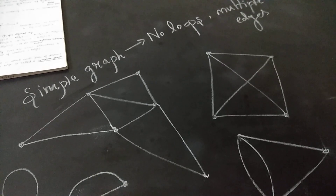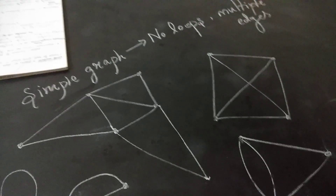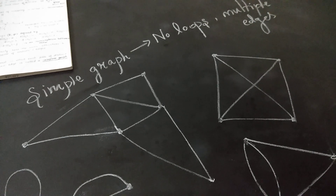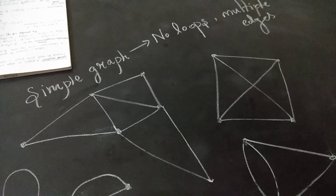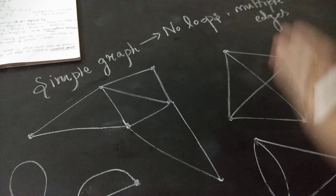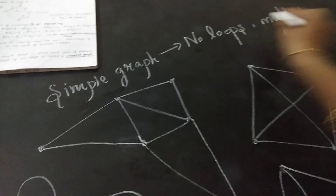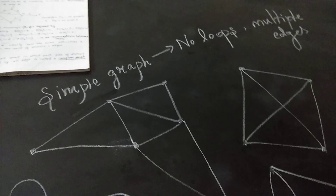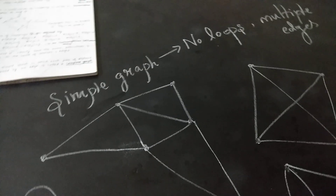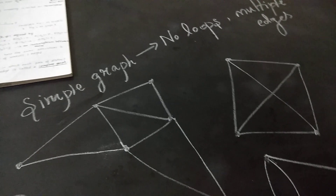I will be explaining what is called a simple graph in this video. A simple graph is a very basic definition in graph theory. A simple graph means a graph that contains no loop and no multiple edges. Here you can see some examples of a simple graph.